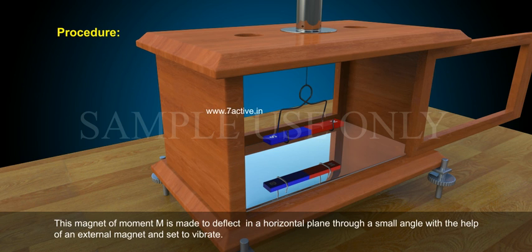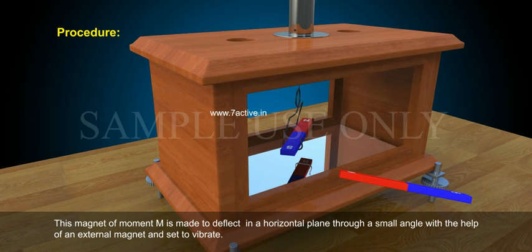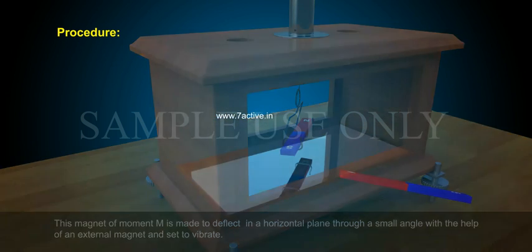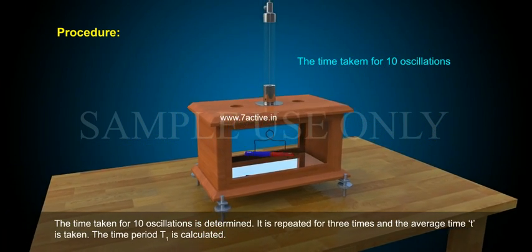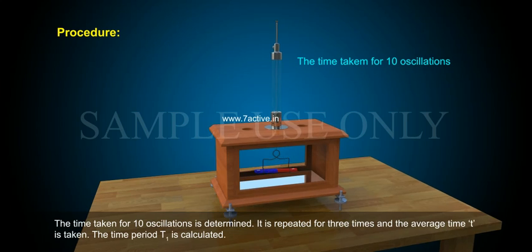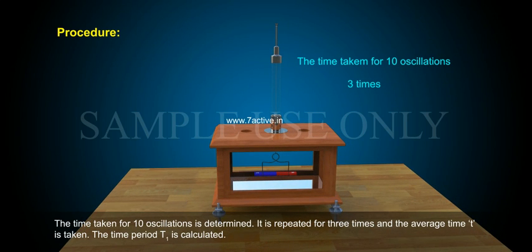This magnet of moment M is made to deflect in a horizontal plane through a small angle with the help of an external magnet and set to vibrate. The time taken for ten oscillations is determined. It is repeated for three times and the average time T is taken. The time period T1 is calculated.